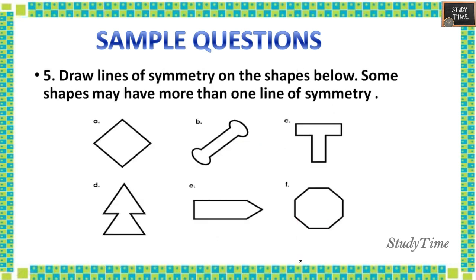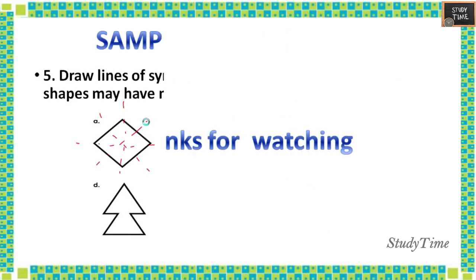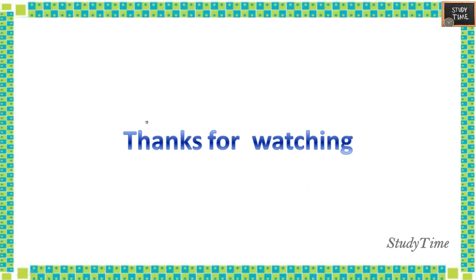Next, draw lines of symmetry on the shapes below — some shapes may have more than one line of symmetry. This means you draw the line on which the shape is divided into identical parts. For example, this can be a line of symmetry, this can be a line of symmetry, this can be a line of symmetry, and this can be a line of symmetry. Similarly you can finish the other shapes.